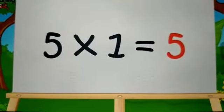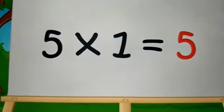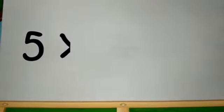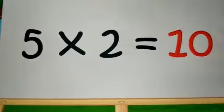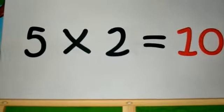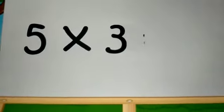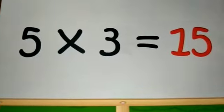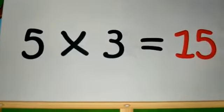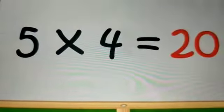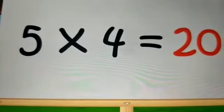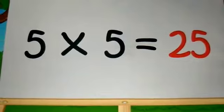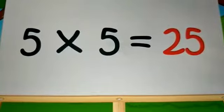5, ones are 5. 5, twos are 10. 5, threes are 15. 5, fours are 20. 5, fives are 25.